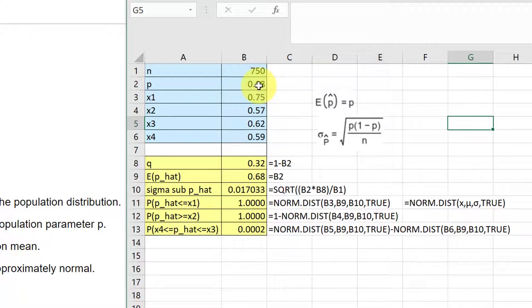I like to calculate q, which is 1 minus p, and I've done that in that cell there. 1 minus p is equal to 1 minus b2. So our sigma sub p hat, using this formula, and again 1 minus p is just q, so it would be equal to the square root of b2 which is our p times q, 0.32, divided by n which is b1. Taking the square root of the whole thing gives me a sigma sub p hat of 0.017.